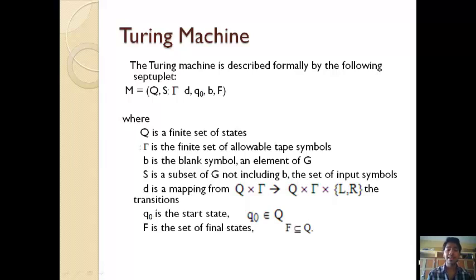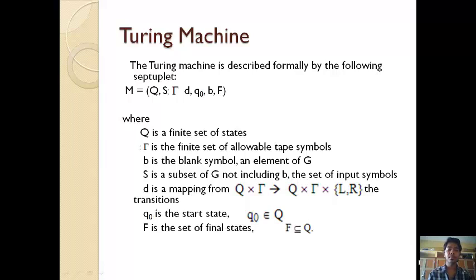B is the blank symbol. S is the subset of Gamma not including B. Delta is the mapping from each state using Gamma to the next state. Q naught is the initial state and F is the final state.